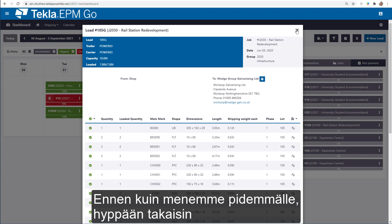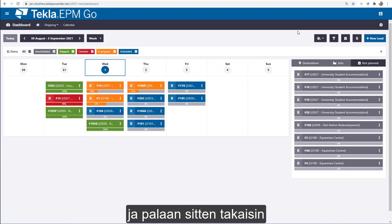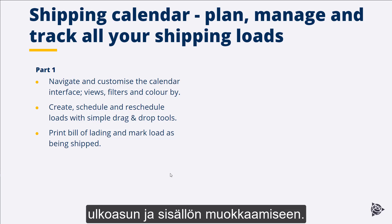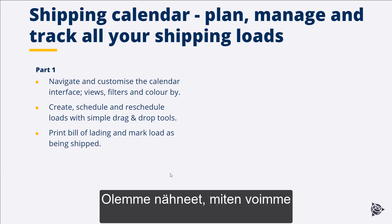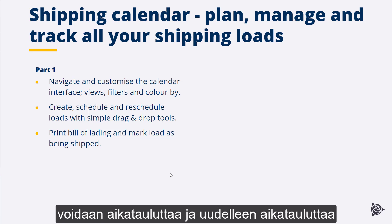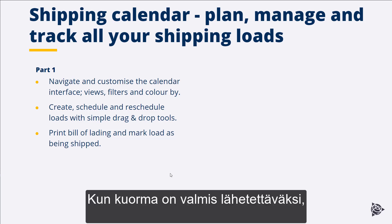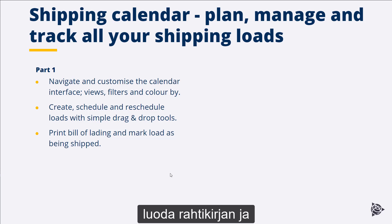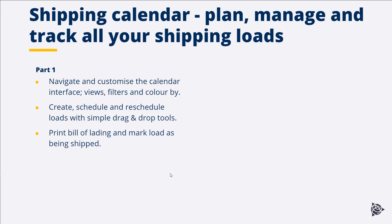Before we go any further I'm just going to jump back into the slides for a quick recap. We've seen how to navigate the calendar view and use tools to customize how it looks and feels. We've seen how to add a load directly within the calendar itself, and how loads created in EPM can be scheduled and rescheduled with simple drag-and-drop tools. Once a load is ready to be shipped, we can mark it as such directly in the calendar, generate the bill of lading, and pull directions to the delivery site.